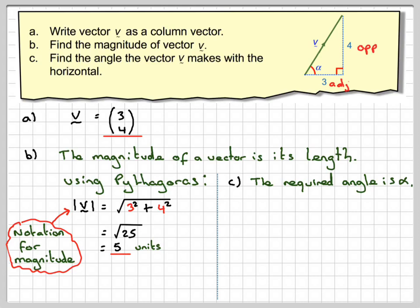And we can find alpha using a bit of trigonometry. This is the opposite, this is the adjacent, and therefore tan alpha is opposite over adjacent, opposite over adjacent.